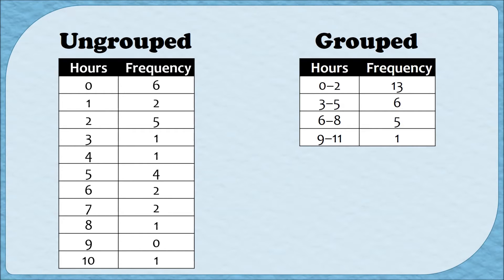Now, you might want to group your categories like this if you have a really wide range of categories. If I had from zero to 30 hours a week, my frequency distribution, if it was ungrouped, would have 31 rows in it — and that's a little bit ridiculous. So in that case, I would want to have groups, going from zero to four, five to nine, and so on. That's an advantage of a grouped frequency distribution: if you have a wide range of data, you don't have to have as many categories as you have data values.